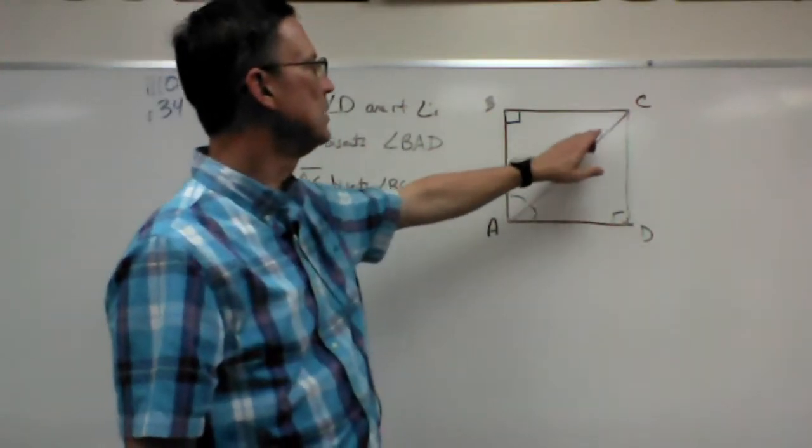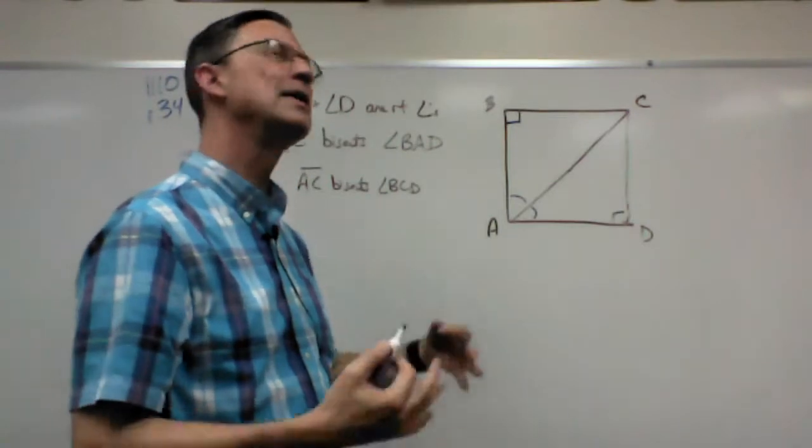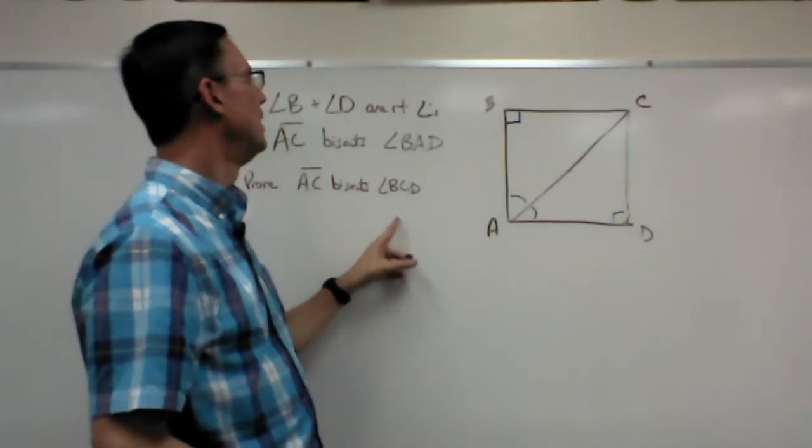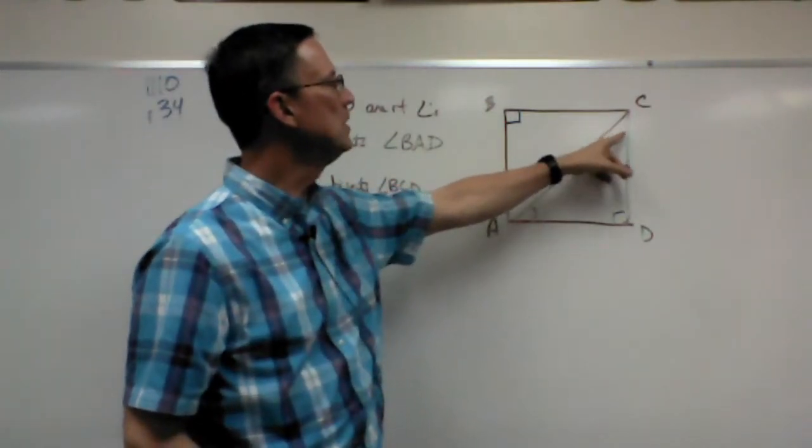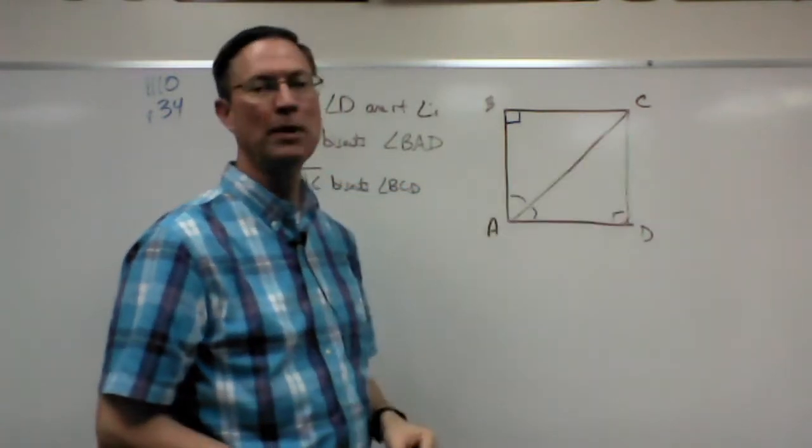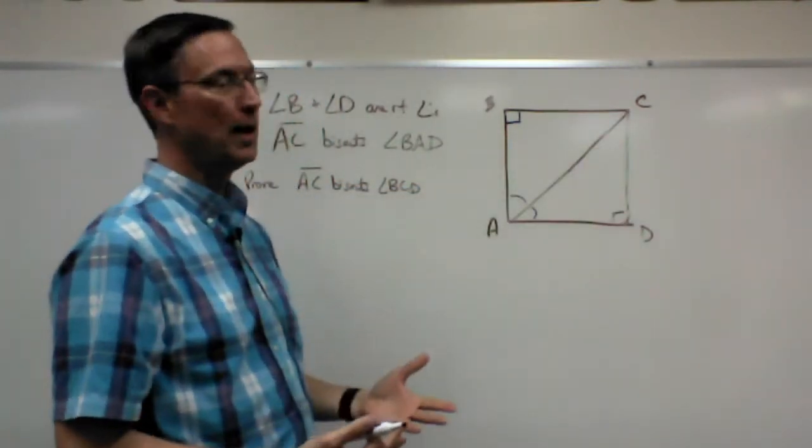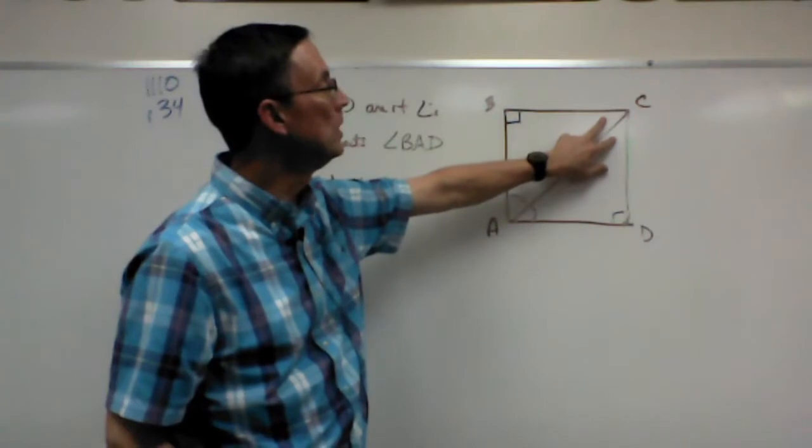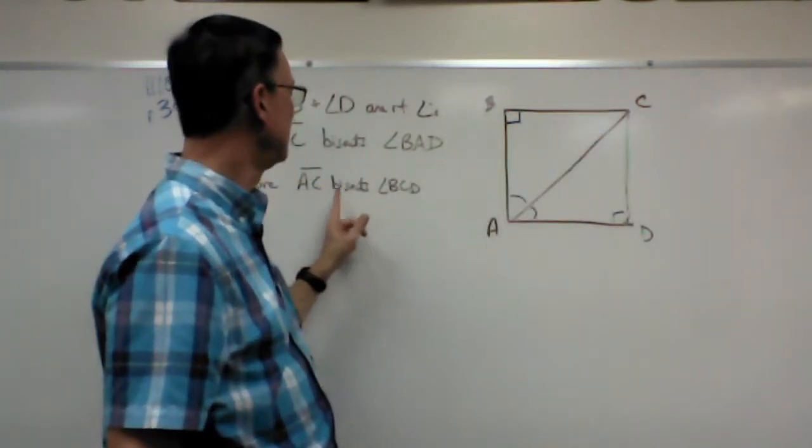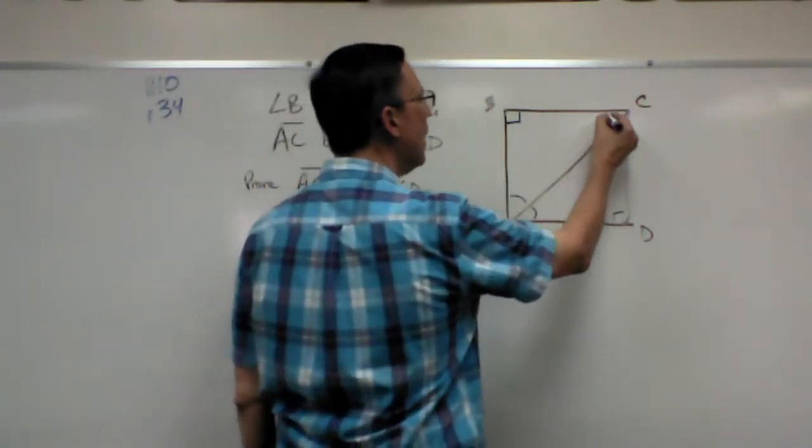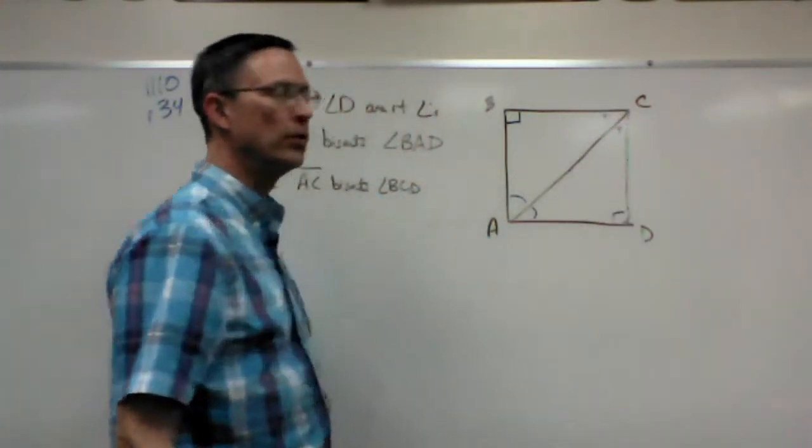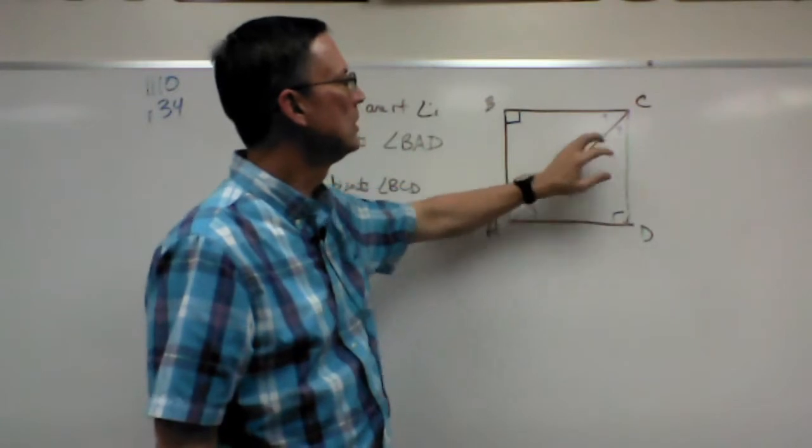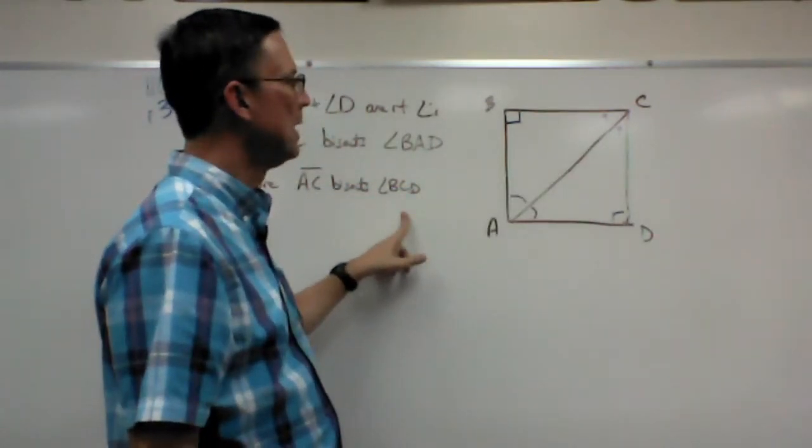Now you might also be tempted to say, oh well then this must be equal to this. We can't say that yet. I know it looks like it. That's actually what we're trying to prove, is that the same line bisects this angle by forming two congruent angles. But we have to build up to that. If I can prove that these two angles are indeed congruent, then I can state that AC bisects angle BCD. So I'm going to put a question mark in both of those corners, because that's what I'm trying to get to. Proving these are congruent because that will mean this bisects it.